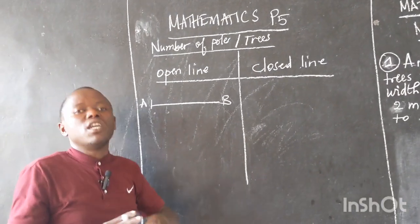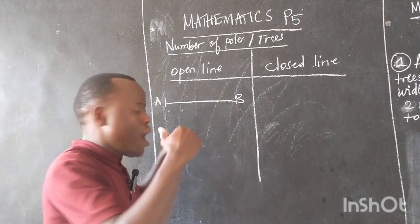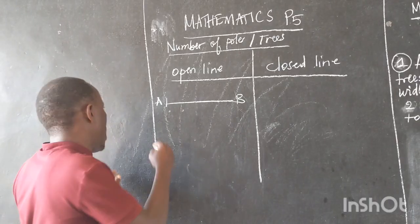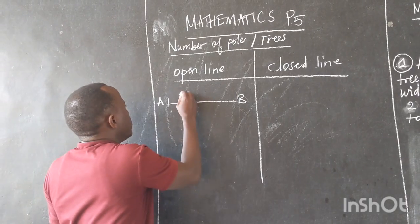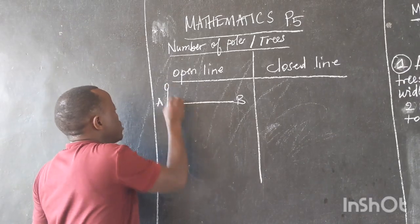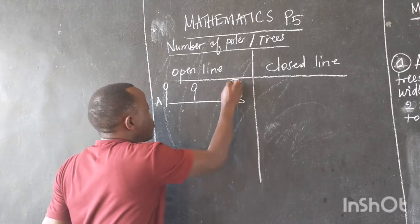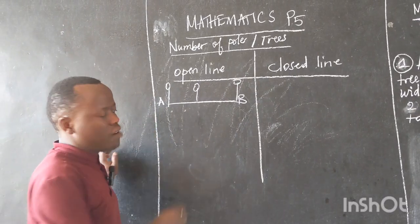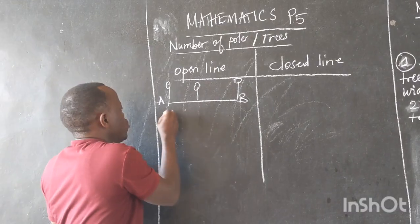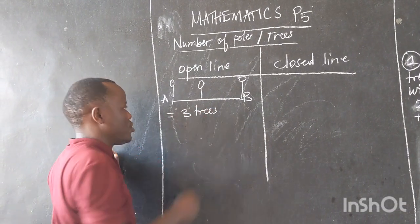On this road there are some green trees. How can we count the number of trees? For example, if on this road we have three trees — this is a tree, this is a tree, and this is a tree. How many trees do we have? One, two, three. So we have three trees.